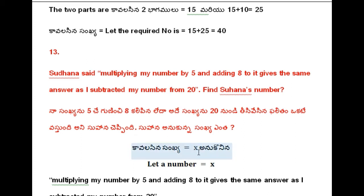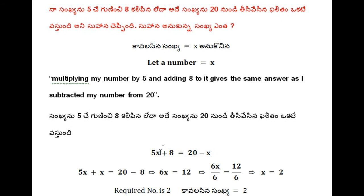Let her number be taken as x. Here she is multiplying that number by 5, giving 5x. And then 8 is added to the product. If a number is multiplied by 5 and 8 is added, then it equals the result when the same number is subtracted from 20. So: 5x plus 8 is equal to 20 minus x.